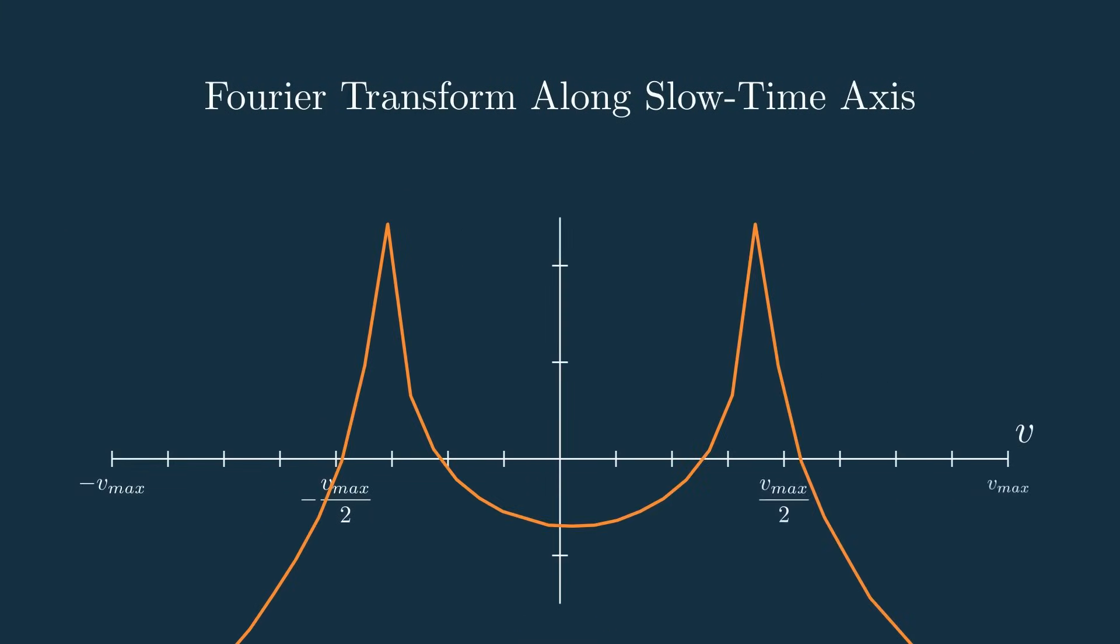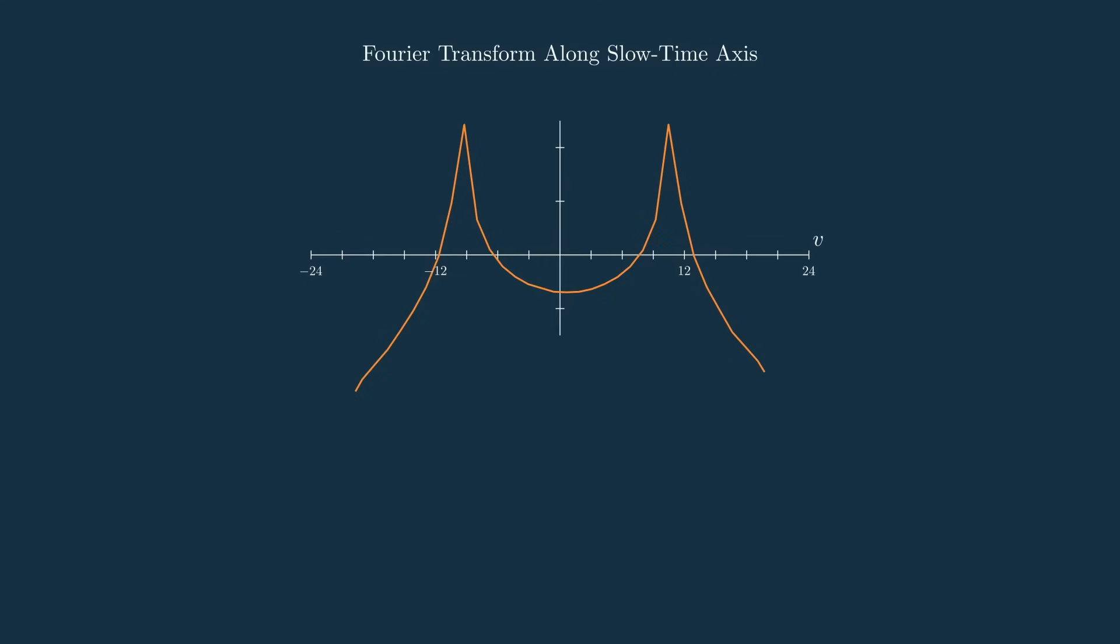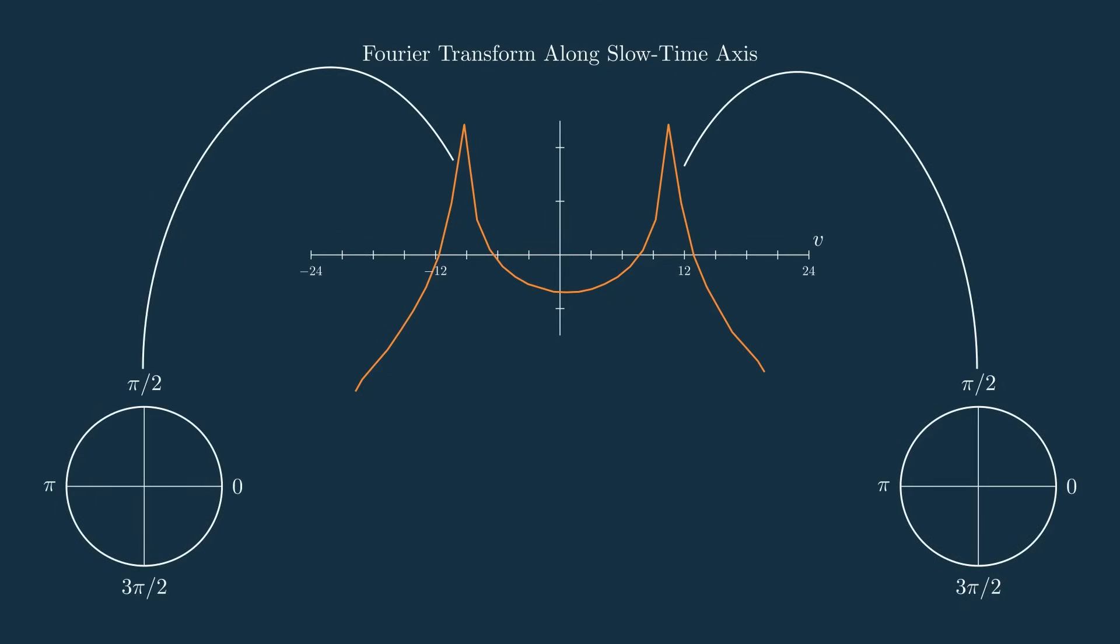Here we have the FFT along the slow time axis at the peak that consists of two different targets. Since there's two targets traveling at two different speeds, we actually get two peaks in the velocity spectrum. Each of these peaks are then a function of how fast and in what direction the phase is going around the unit circle, or how large that phase delta is between chirps which again is a function of velocity. Insanely cool, right?